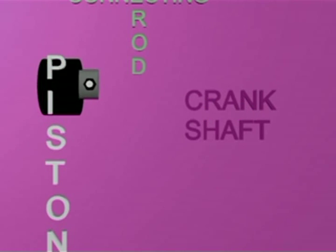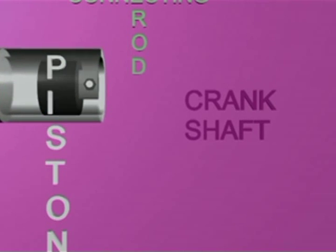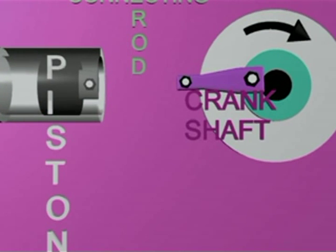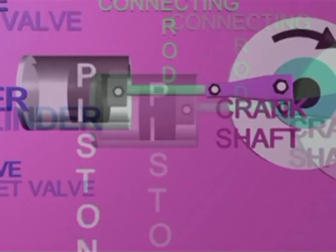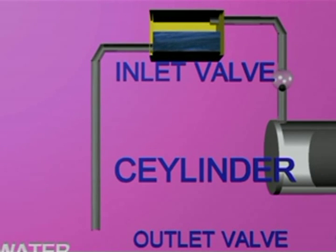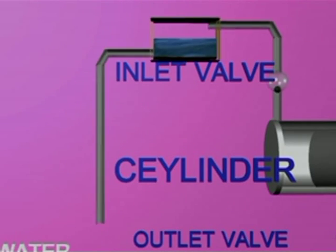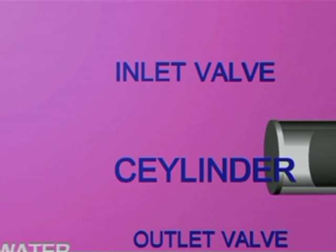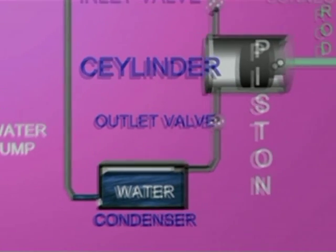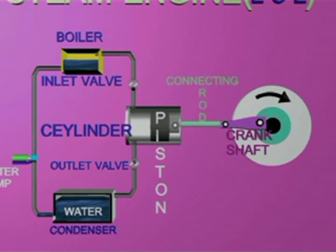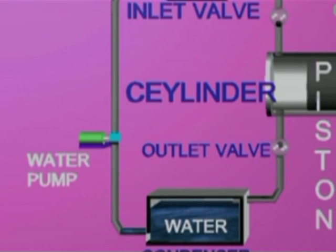An external combustion engine mainly consists of a cylinder fitted with an air-tight piston. This piston is connected to a crankshaft through a connecting rod. The cylinder is connected through an inlet valve coming from the boiler at the top and an outlet valve connecting to a condenser at the bottom. A pump is used to pump the water to the boiler from the condenser.